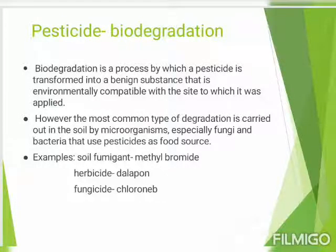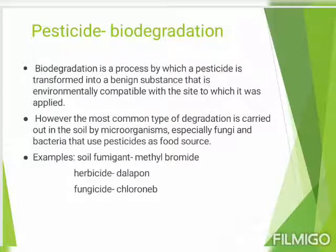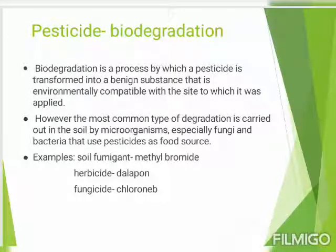Today we discuss pesticide biodegradation. Biodegradation is a process by which a pesticide is transformed into a substance that is environmentally compatible with the site to which it was applied. The most common type of biodegradation is carried out by soil microorganisms, especially fungi and bacteria, that use pesticides as a food source. Examples include soil fumigant methyl bromide, herbicide diuron, and fungicide chloropicrin.